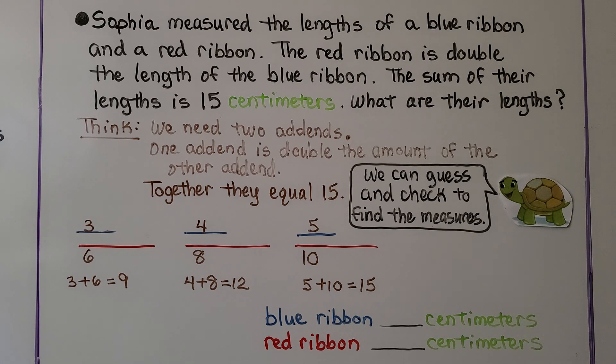We can guess and check to find the measures. We know the red ribbon is double the length of the blue ribbon. So if the blue ribbon is 3, then the red ribbon would have to be 6. But when added together they equal 15 and 3 plus 6 is equal to 9. So it's not 3 centimeters and 6 centimeters.